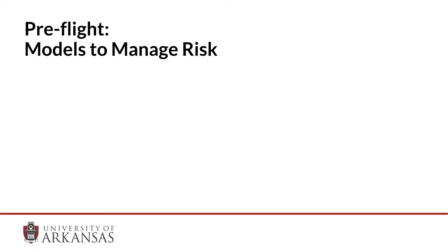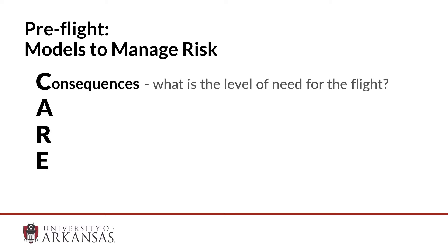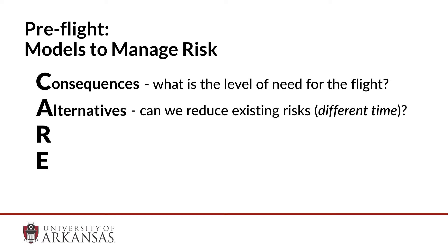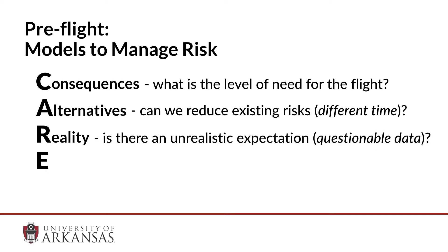After applying this to each of the factors in PAVE, which assess your readiness to fly, CARE is an acronym to remember how we make go-no-go decisions. Consequences: what is the level of need? Alternatives: is there something that can reduce existing risk, such as flying at a different time? R is for reality: is there an unrealistic expectation, or is some of my data questionable?